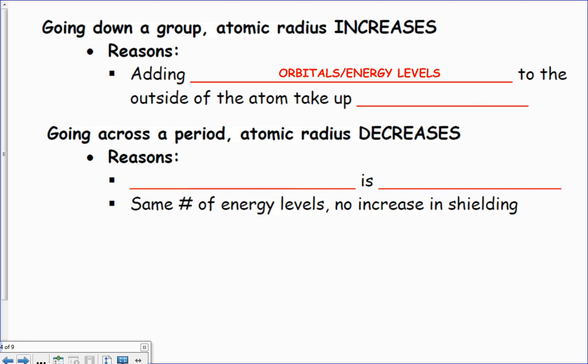To the outside of the atom, therefore it takes up more space. As I go across from left to right, the atomic radius is actually going to decrease because my nuclear charge is increasing.